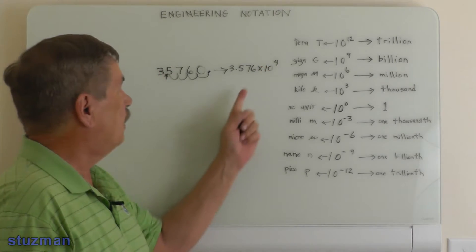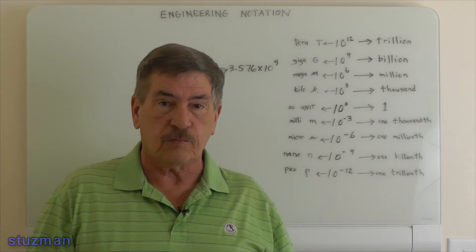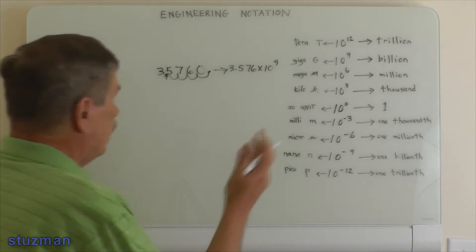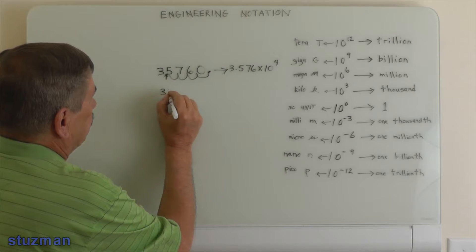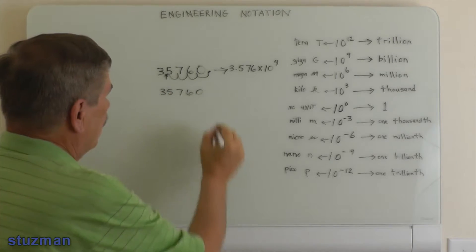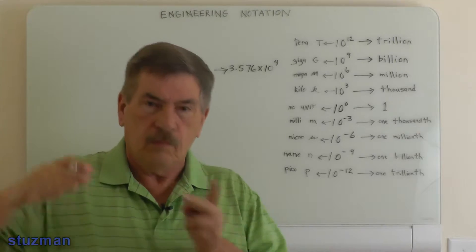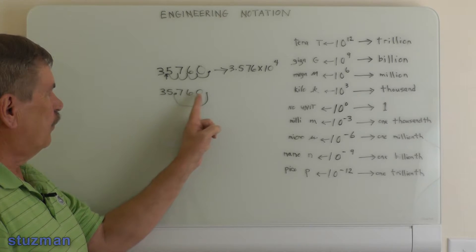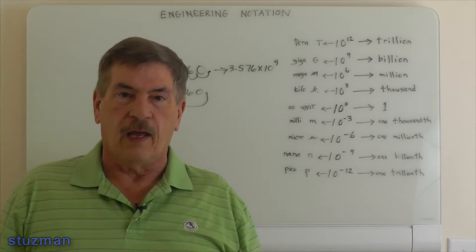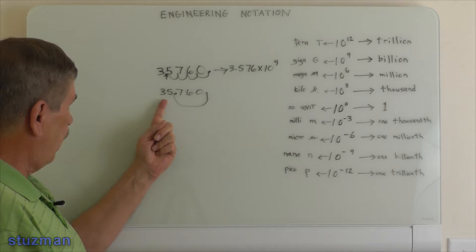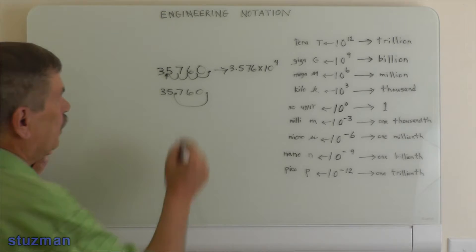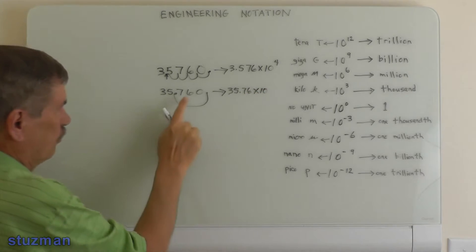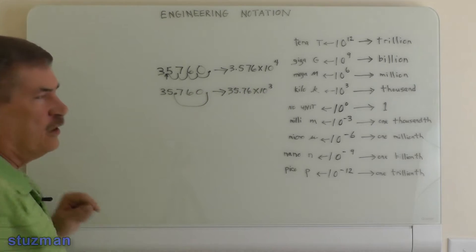Now recall what I just said — that four, we can't have that in engineering notation. We have to have a multiple of three: three, six, nine, minus three, minus six, minus nine. So we're going to start with the same number again. The decimal point is understood to be right here. We're going to move over three places. Now look at the digits to the left of the decimal point — I have two digits: 35. So now I can write this as 35.76 times 10 to the third power.